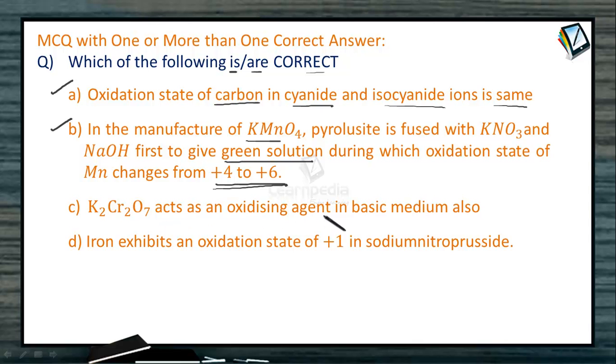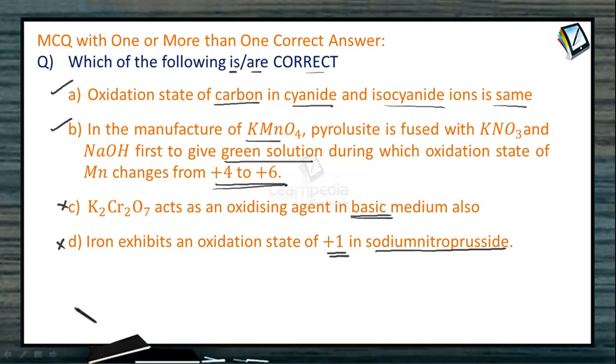K2Cr2O7 acts as an oxidizing agent in basic medium. It acts as an oxidizing agent in acidic medium but not in basic medium, so this is wrong. Iron exhibits an oxidation state of +1 in sodium nitroprusside - this is also right. So A and B are the answers.